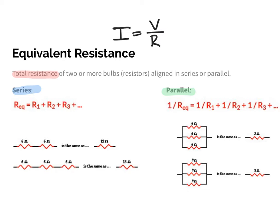In a series circuit, finding the equivalent resistance is straightforward — the resistances simply add together. For example, two 6-ohm resistors placed in series create a single 12-ohm equivalent resistance. If I have three bulbs of 6 ohms each all lined up in series, they add together to give 18 total ohms. So in a series circuit, it's as simple as adding them together.